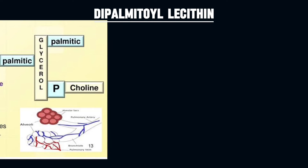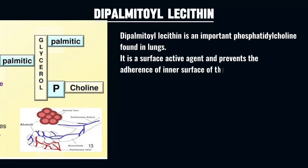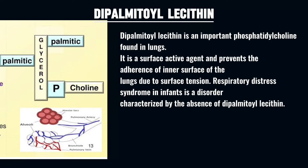Dipalmitoyllecithin: when two palmitic fatty acids are attached to the glycerol backbone, which is then attached to a phosphate group and the nitrogenous base choline. It is an important phosphatidylcholine found in the lungs, acting as a surface-active agent that prevents the adherence of the inner surfaces of the lung due to surface tension. Respiratory distress syndrome in infants is characterized by the absence of dipalmitoyllecithin.